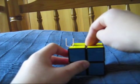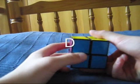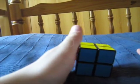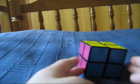This side is called the downside, which will be denoted by a D. This side is called the left side, which will be denoted by an L. And this side is called the R side, which will be denoted by an R.